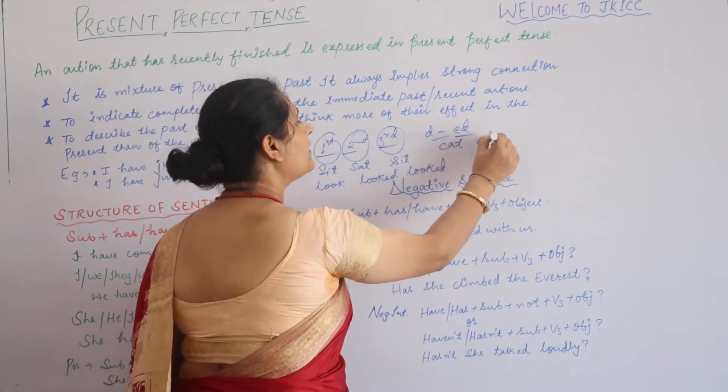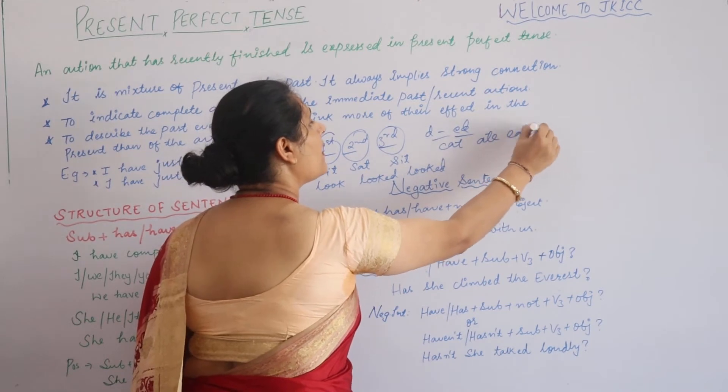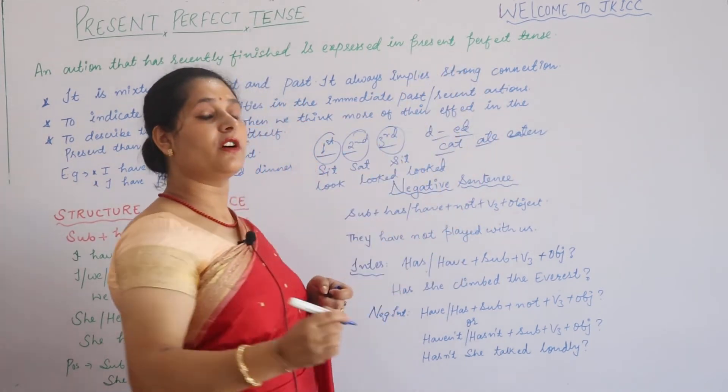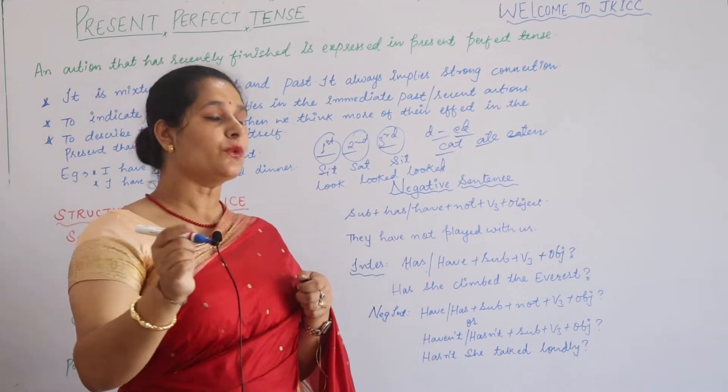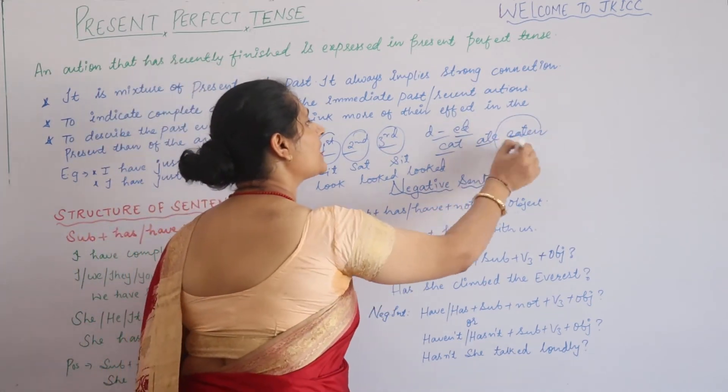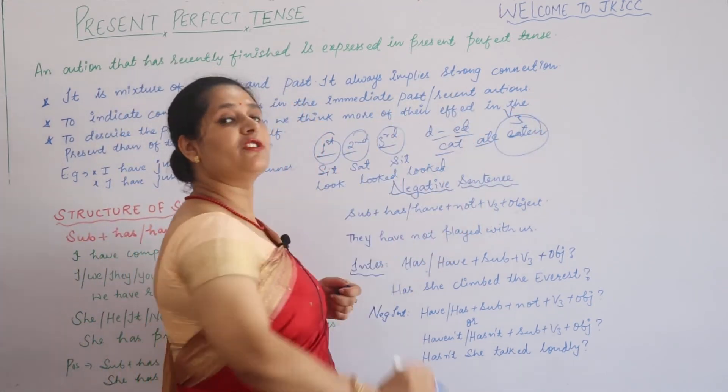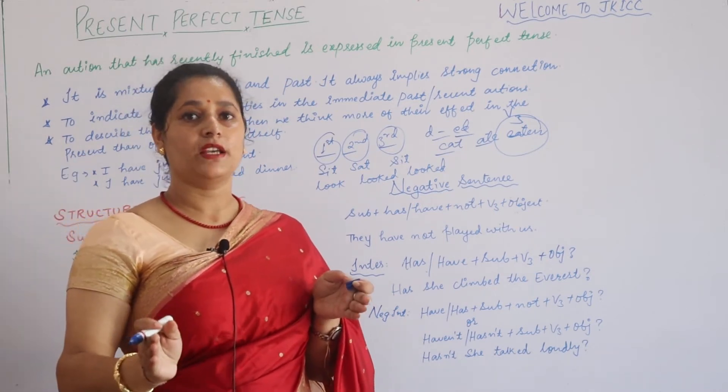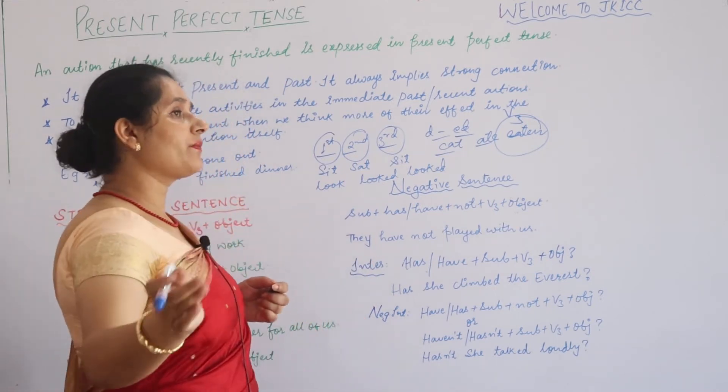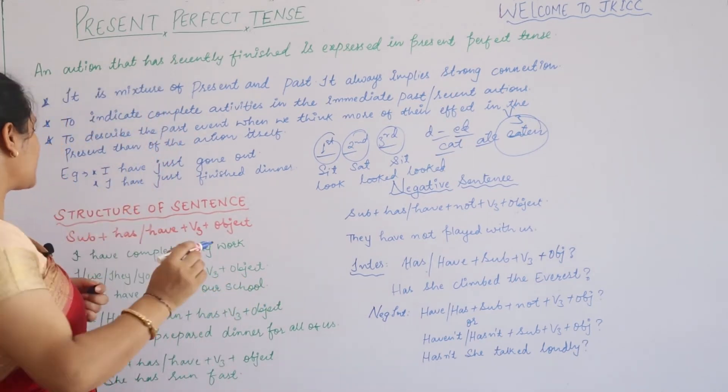For example, eat, ate, eaten. I'm emphasizing the conjugation of verbs in this tense because we will use here V3, the third form. That is why it is very important.